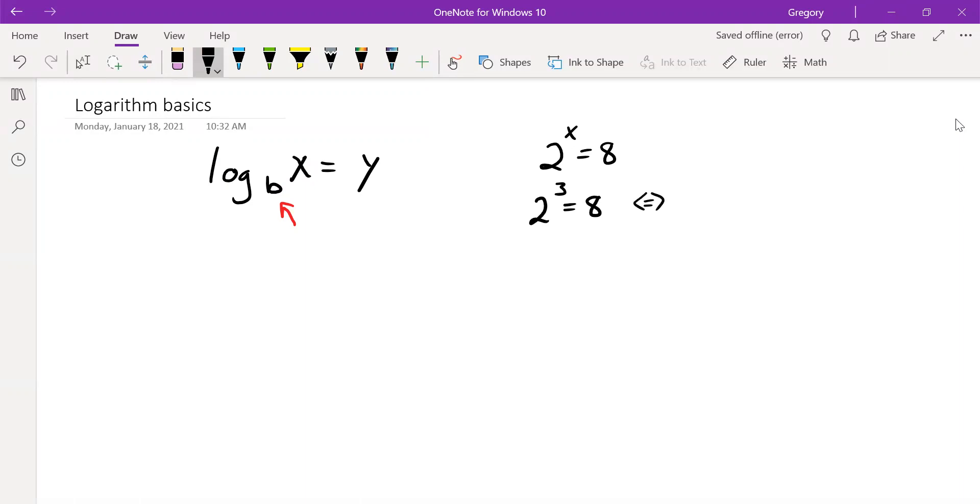We can also say log base 2 of 8 equals 3. And this is what's known as changing between exponential and log form. In other words, I have a logarithm because I have an exponential and vice versa. Notice the logarithm here that I made has the same base as the exponential. So the log base 2 of 8 is the solution to 2 to what power equals 8?